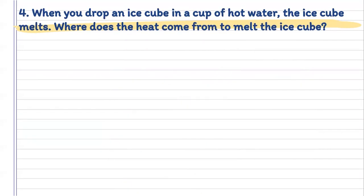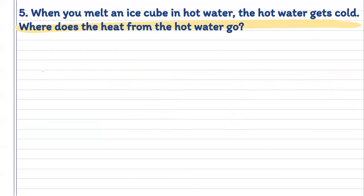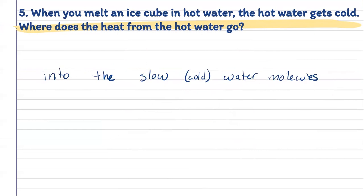Now, what if instead of heating the water, we try to cool it? You have a cup of hot water and you add some ice. We know that the ice is going to melt, but where does that heat come from? Well, it's going to come from the fast-moving or hotter water molecules. The higher-temperature molecules in the hot water are going to collide with the slower-moving particles in the ice. As they collide, the slower-moving particles in the ice are going to slowly start speeding up, causing it to melt. So then where does the heat from the hot water go? As it collides with the slower-moving particles in the ice, it's going to cause it to slow down and lose some of that temperature, causing it to cool. But not only will the heat from the water go into the water molecules, some of it will also end up going into the surroundings or just into the air around it.